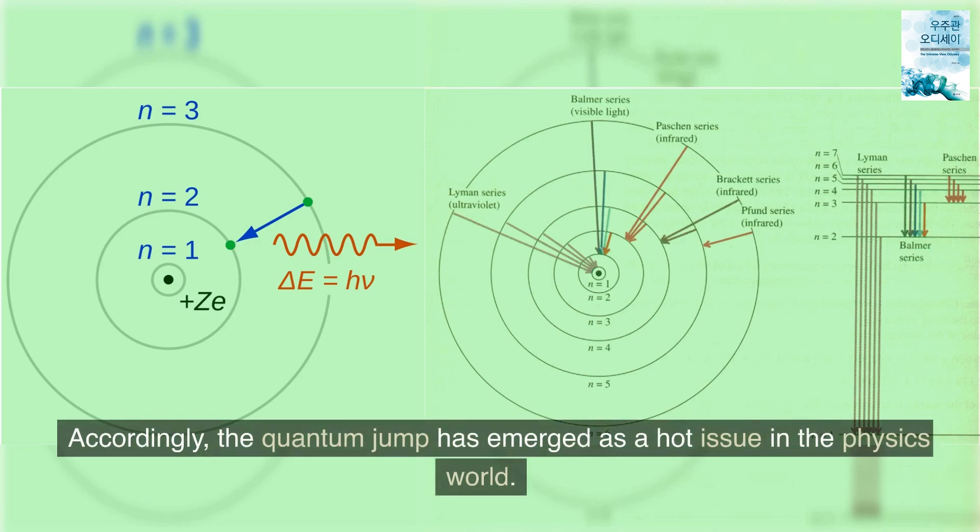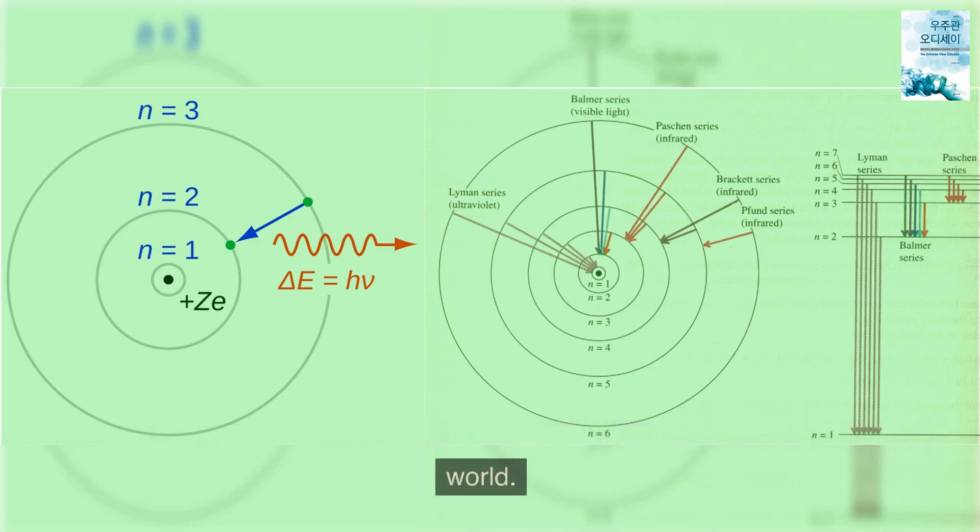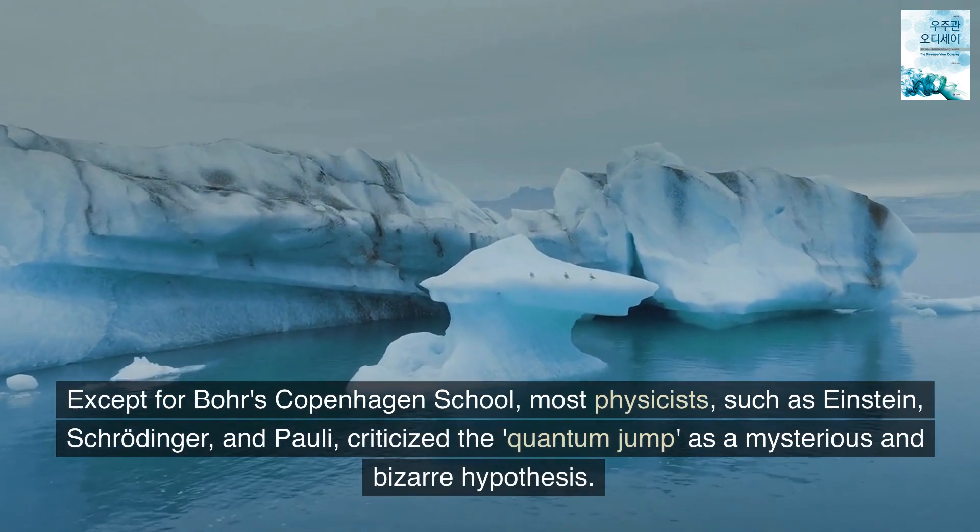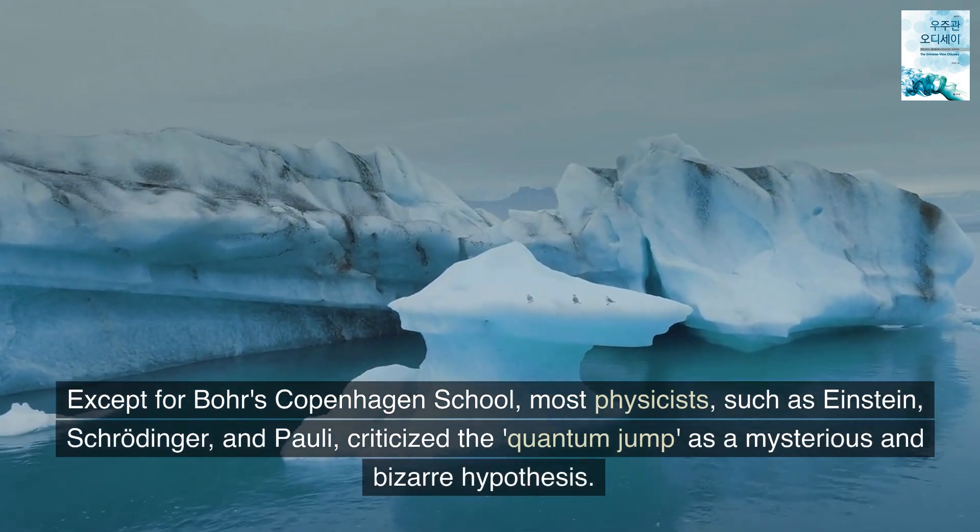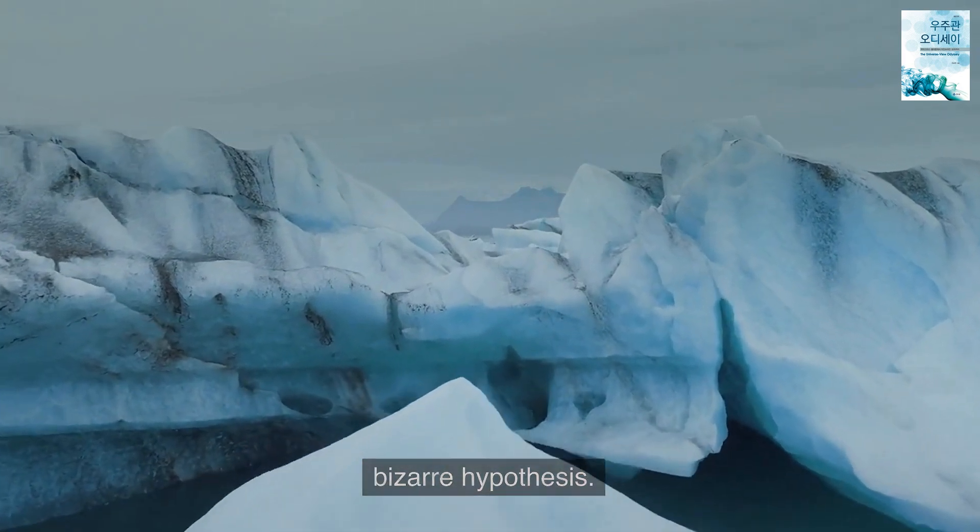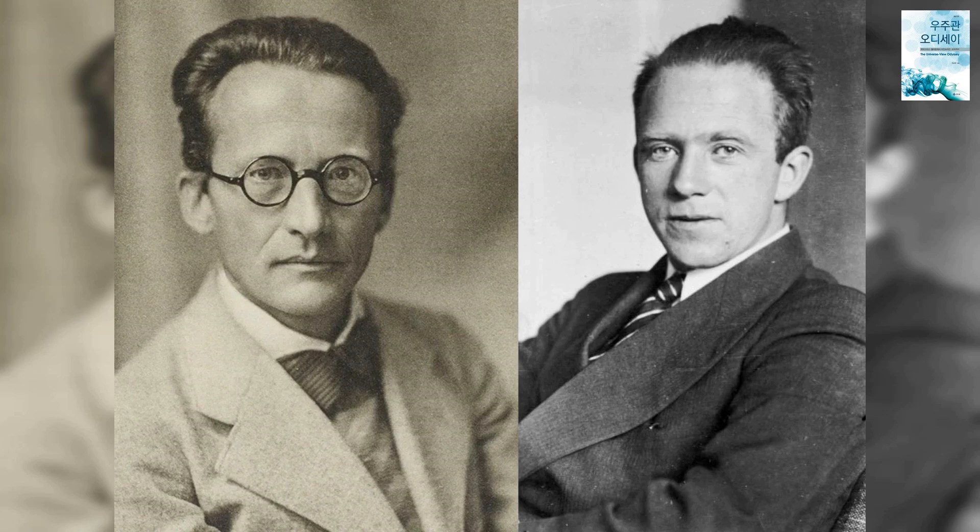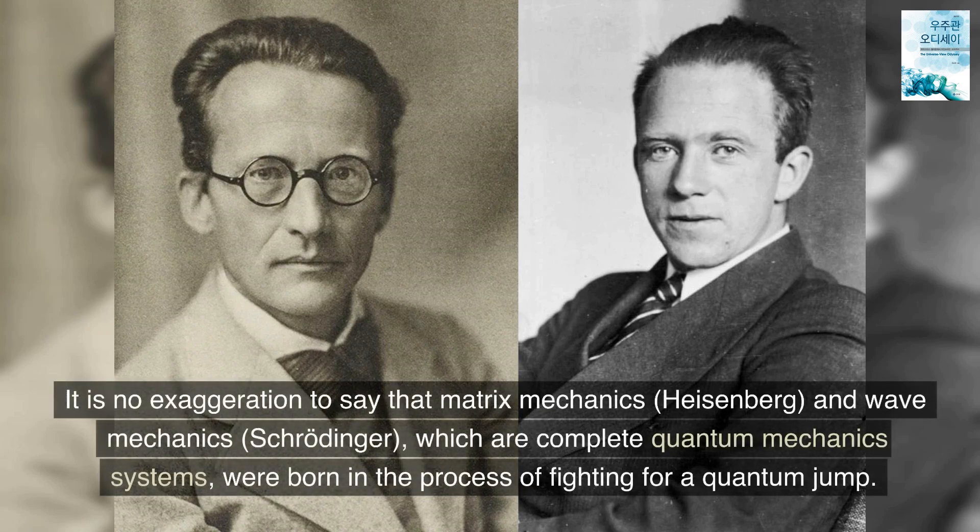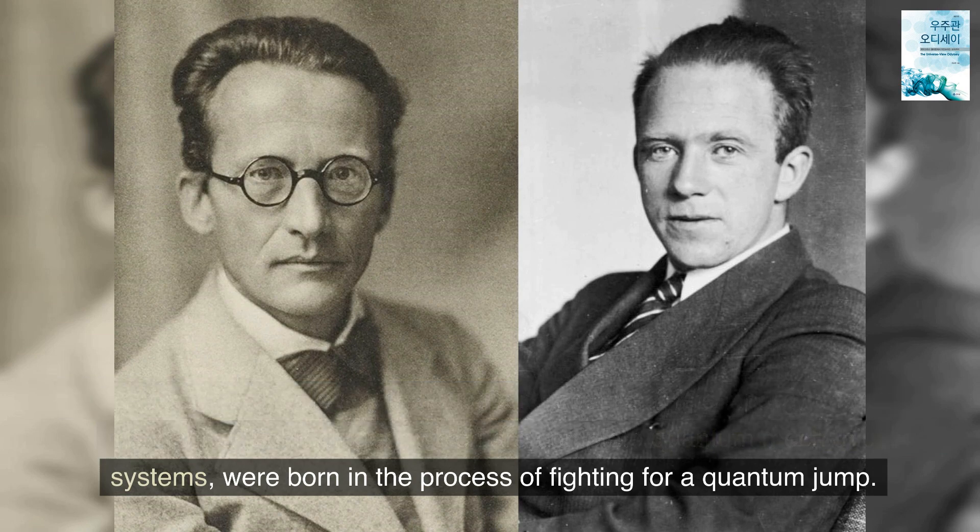Accordingly, the quantum jump has emerged as a hot issue in the physics world. Except for Bohr's Copenhagen school, most physicists, such as Einstein, Schrödinger, and Pauli, criticized the quantum jump as a mysterious and bizarre hypothesis. It is no exaggeration to say that matrix mechanics, Heisenberg, and wave mechanics, Schrödinger, which are complete quantum mechanics systems, were born in the process of fighting for a quantum jump.